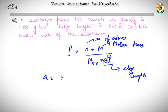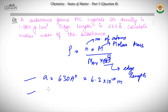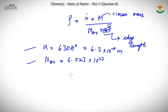A is given to be 630 angstrom, i.e. 1 angstrom is 10 to the power minus 10 meter, so this comes out to be 6.3 into 10 to the power minus 10 meter. The Avogadro's number is 6.023 into 10 to the power 23, and density is 1.984 gram per centimeter cube.